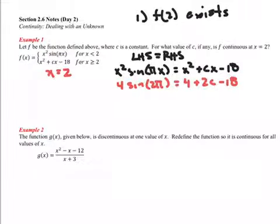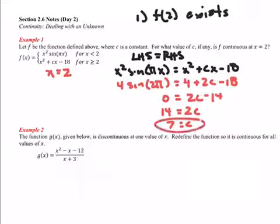Okay, sine of 2 pi is 0, so 4 times 0 is 0. Over here I get 2c equals, oops, not equals, minus 14. And so 14 equals 2c, therefore c would have to equal 7 in order for this function, this piecewise function, to be continuous.